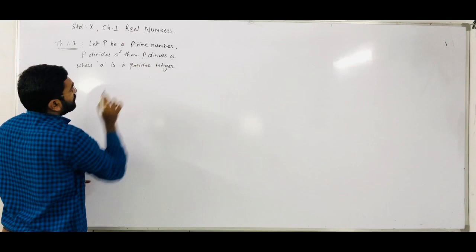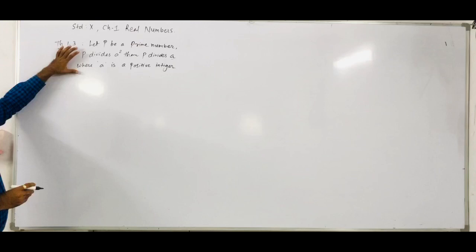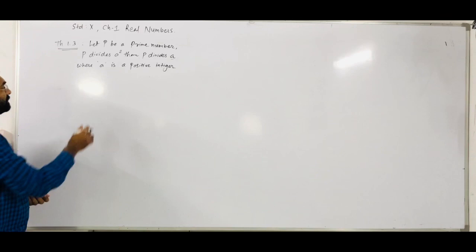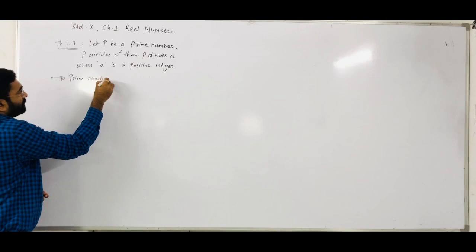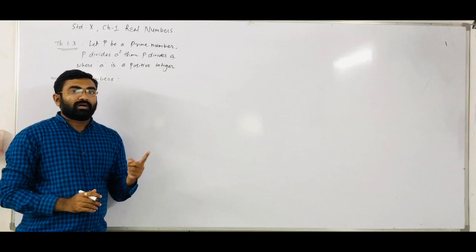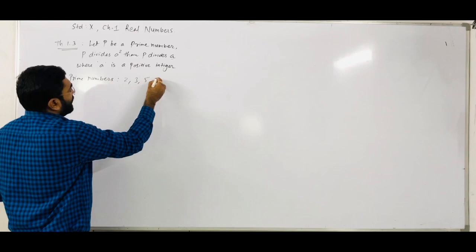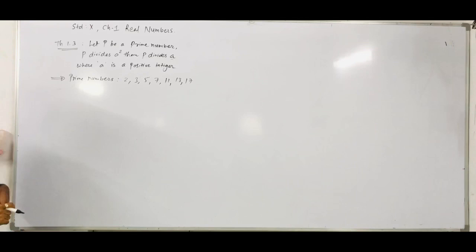Now, P is a prime number — we have already discussed prime numbers in our previous video. Prime numbers are numbers where there are only two factors: 1 and the number itself. So prime numbers are 2, 3, 5, 7, 11, 13, 17 — all these numbers are prime numbers. So P is any one of the prime numbers.